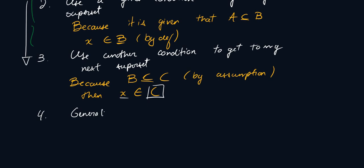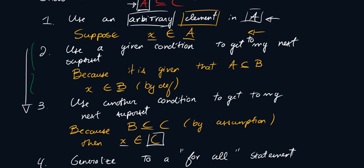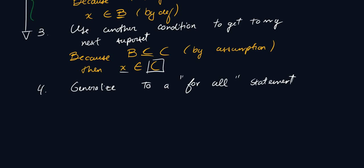So what you can do is you can now generalize to a for all statement. And a for all statement is very powerful because it says that anything in something would also happen to the other thing. In this case, you can use an arbitrary element in A, and it'll be in C. So that means for any element in A.